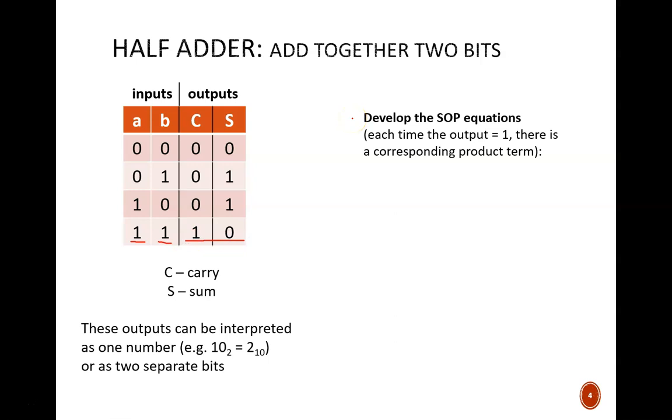Now we have two output columns. Even though we interpret them as a coherent 2-bit number, they are separate logic signals, so each output variable, C and S, requires its own Boolean equation. To write the equations in SOP form, we look for the ones on the truth table and form a product term that will give us a 1 with those particular input values. The equation for C is simply C equals A and B. The only time C is true is when both A and B are true.